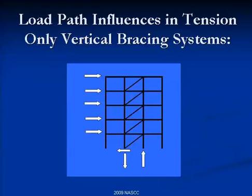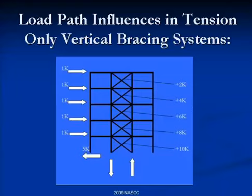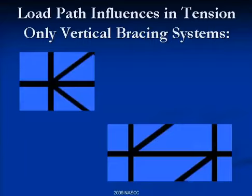Now let's go to load path influences in tension-only systems. Here's a tension-only system — the load path goes to the ground; that's your active system. To put some numbers on it: if each brace picks up 2 kips of axial load per 1 kip of applied load, as you come down the building the braces will have 2, 4, 6, 8, 10 kips. Your design drawing will show X's for the braces. The detailers might start to see where this is going.